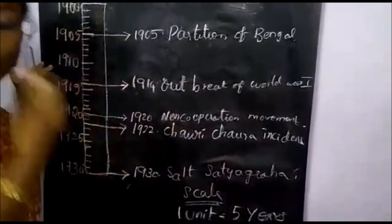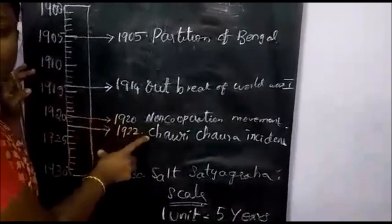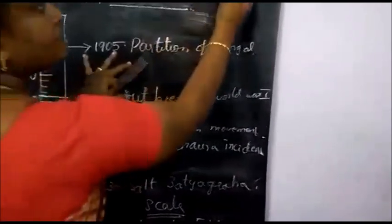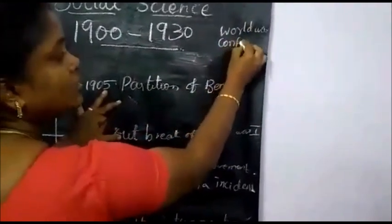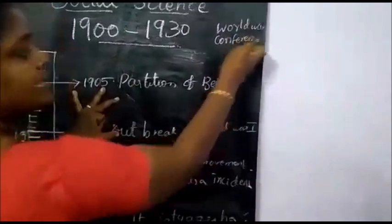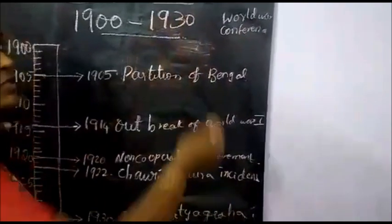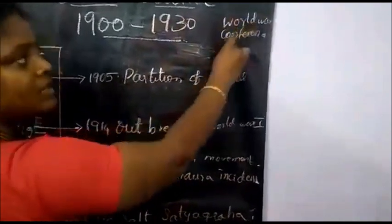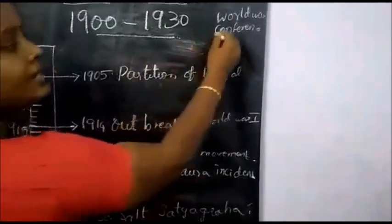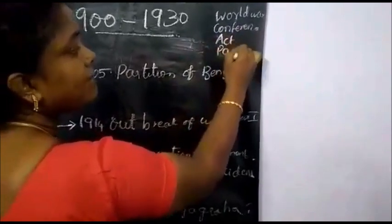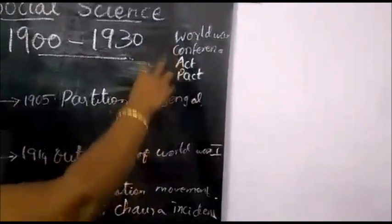These are other important hints: there must not be any repeated incidents or events. For example, you can write 'Outbreak of World War', 'End of World War', and 'Second World War' — these are not repeats. Similarly, First Round Table Conference, Second Round Table Conference, Third Round Table Conference are acceptable. Also acts and pacts are okay. But don't repeat the same event.